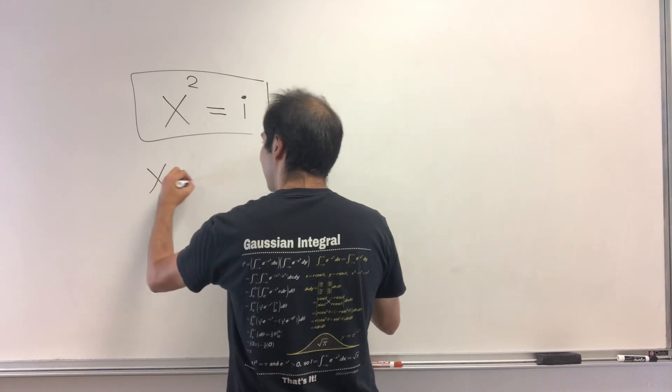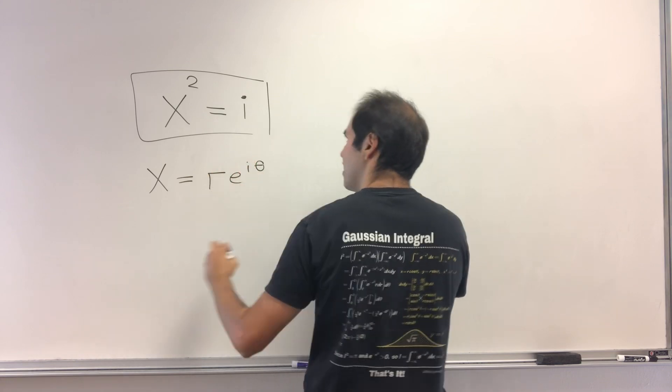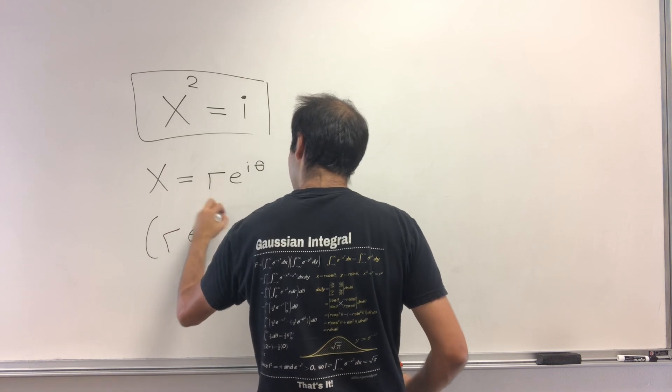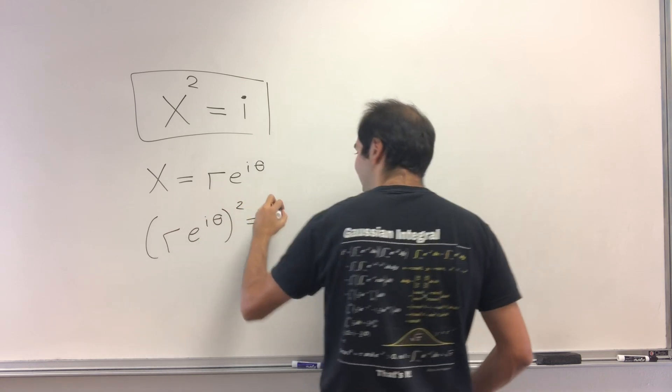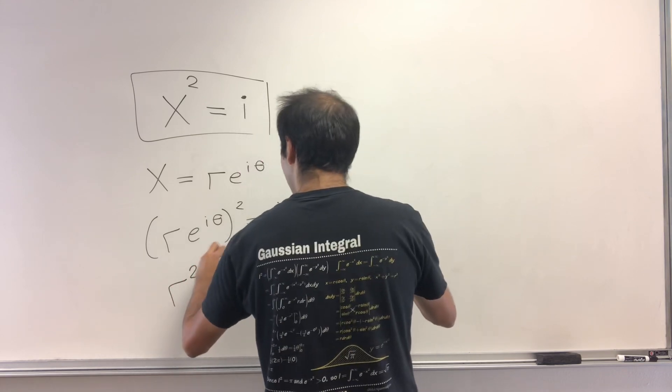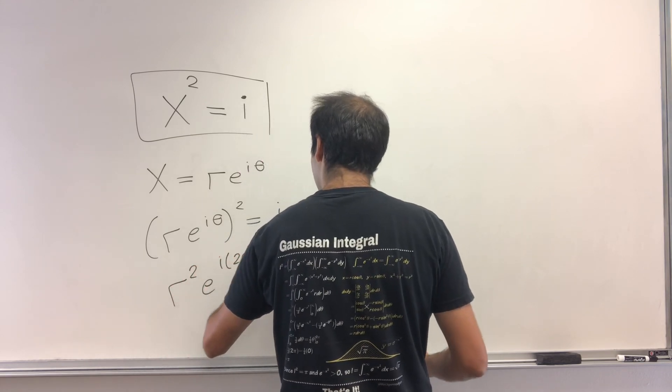So assume x is re^(iθ). Then what we get is (re^(iθ))² equals i, and then we get r²e^(i2θ) equals i.